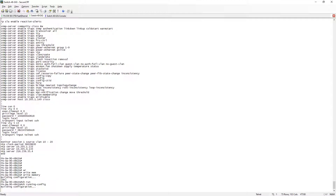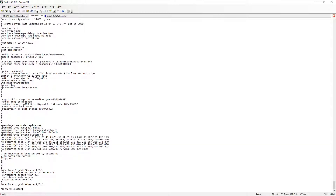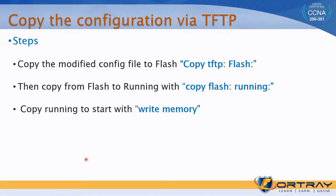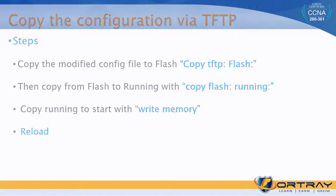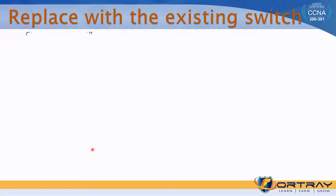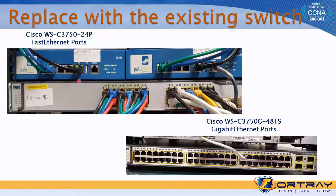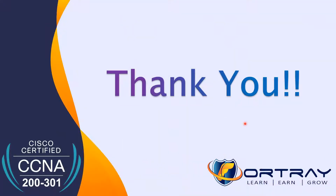Running 'show running' and 'show startup' confirms both have the same configuration. Now we can shut the switch down and replace it. As the final step, we replace the 3750 switch with the 48-port switch — we label all the cables and connect them one by one according to their configuration. Thank you very much.